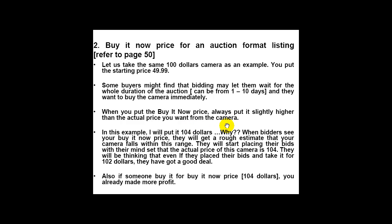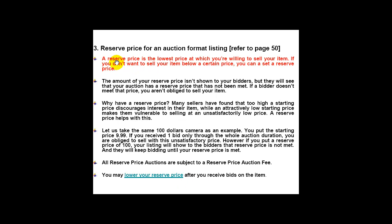Make the Buy It Now price a little bit higher than the real value you want from the camera. When bidders see your Buy It Now price, they will get a rough estimate that your camera falls within the $104 range. They will start placing bids with the mindset that the actual price is $104, thinking that even if they bid and win for a dollar or two less, they've got a deal. And if someone buys it using Buy It Now for $104, you've already made more profit.